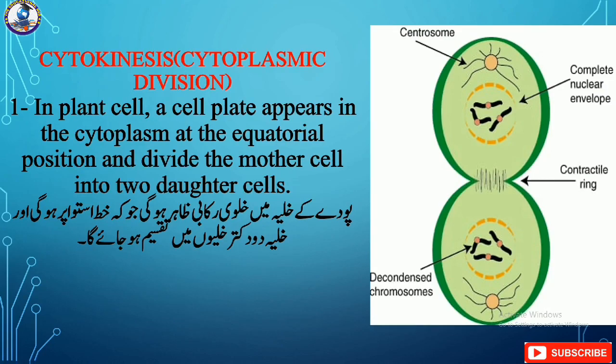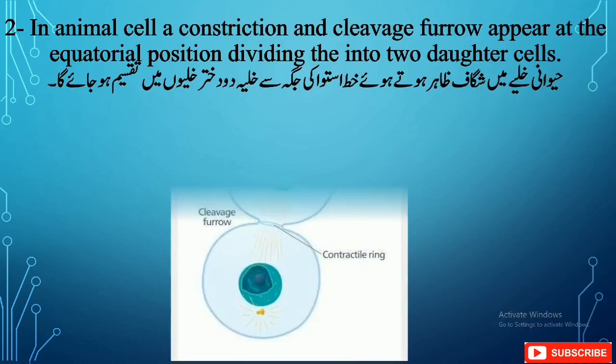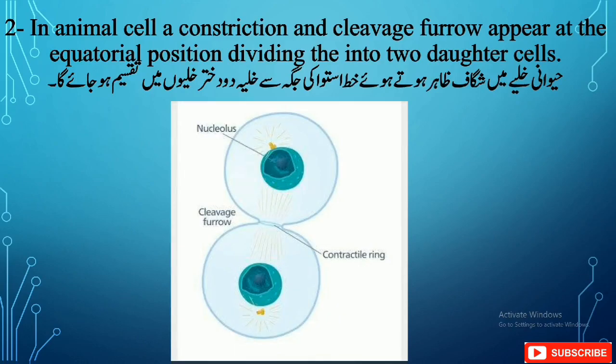In plant cells, a cell plate appears in the cytoplasm at the equatorial position and divides the mother cell into two daughter cells. But in animal cells, a constriction and a cleavage furrow appear at the equatorial position, dividing the mother cell into two daughter cells.